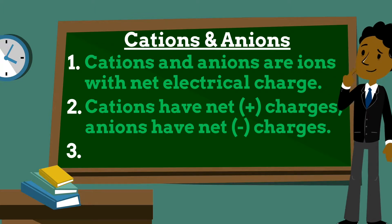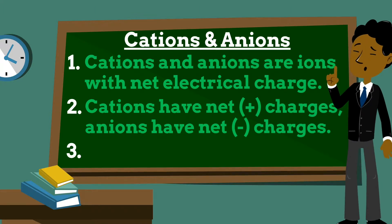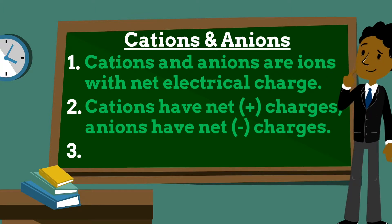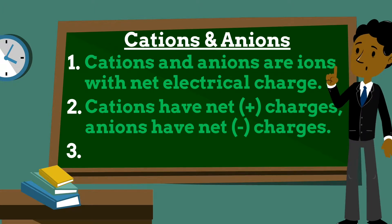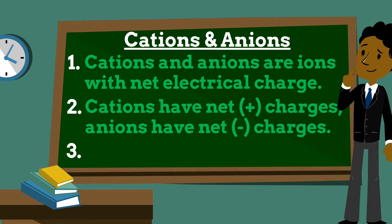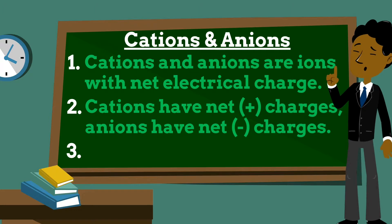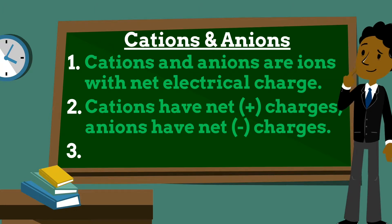Cations are ions with a net positive charge, while anions are ions with a net negative charge. Because they have opposite electrical charges, cations and anions are attracted to each other.